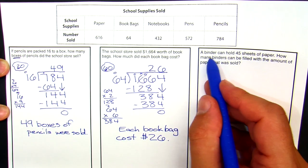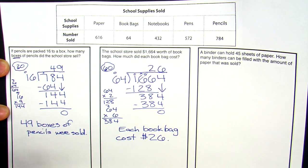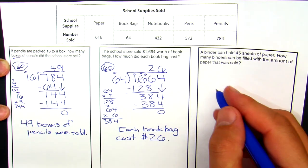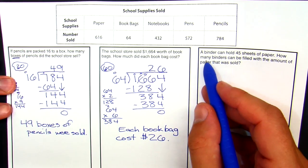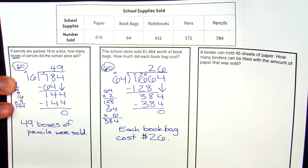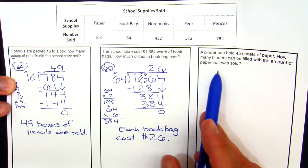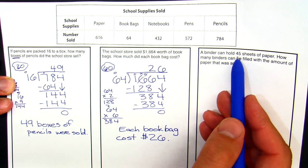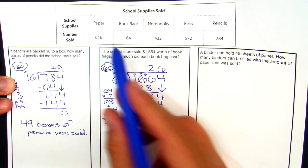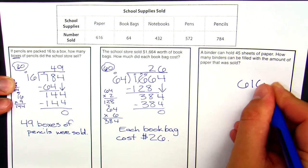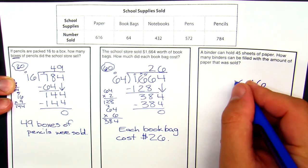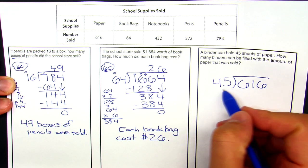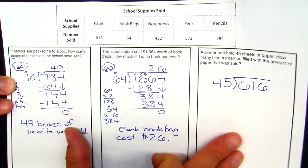Read this last one — it's about binders and paper. So pause it, solve it, and then resume the video and see how you did. Okay, so you read this last problem and paused it. Let's see how you did. A binder can hold 45 sheets of paper. How many binders can be filled with the amount of paper that was sold? We want to know how many binders can be filled. Each binder can hold 45 sheets and there were 616 pieces of paper sold. So we're going to take the entire group of 616 sheets and divide that into groups of 45, because we know each binder holds 45.